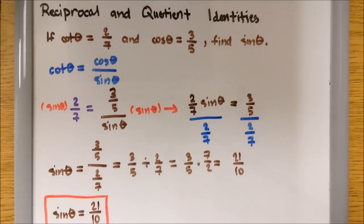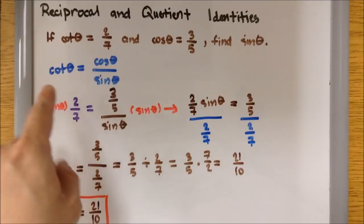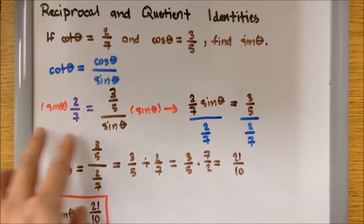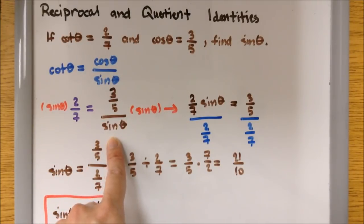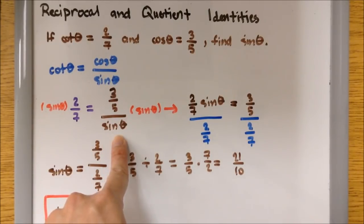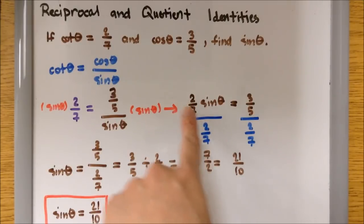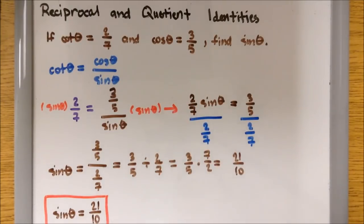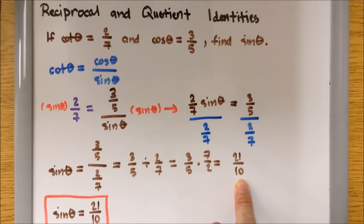This example took a few more steps. I wrote out the quotient identity for cotangent, which was cosine over sine, plugged in the values for cotangent and cosine. Since we were looking for sine in the denominator, I multiplied both sides by sine theta, getting 2 over 7 times sine theta equals 3 over 5. Then I divided both sides by 2 over 7, wrote it as division then multiplication, and simplified to get sine theta equals 21 over 10.